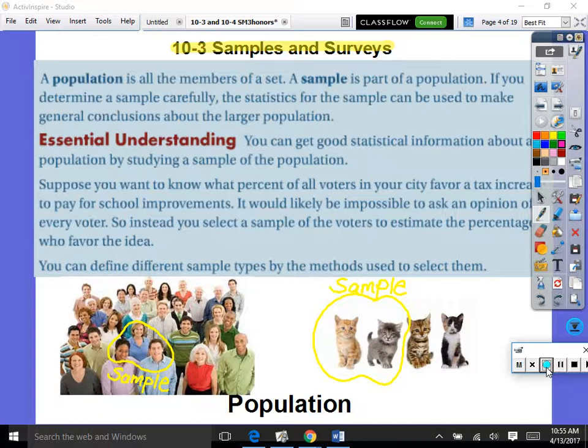So you can get good statistical information about a population by studying a sample of the population, because in reality we can't, a lot of times a population is so large that you can't talk to everybody. So that's when you would need to pick a sample. Suppose you want to know what percent of all voters in your city favor a tax increase to pay for school improvements. This is a good example for us. It would likely be impossible to ask the opinion of every single voter in a city. So instead, you would select a sample of voters to estimate the percent who favor the idea. And then you can get an idea from that. Does that make sense? In general, we can say that yes, they are fine with increasing taxes to help out Westlake High School, for example.